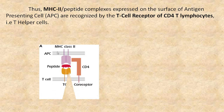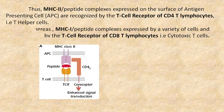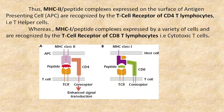MHC class 2 peptide complexes expressed on the surface of antigen presenting cells are recognized by T cell receptor of CD4 lymphocytes, i.e., T helper cells. Whereas MHC class 1 peptide complexes expressed on a variety of cells are recognized by T cell receptor of CD8 T lymphocytes, i.e., cytotoxic T cells. Hope you have understood the structure of T cell receptor.